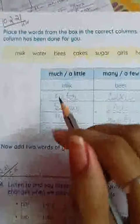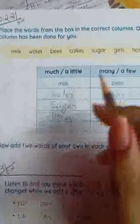Many bees. A few bees. Water. Match water by a little water. Many eggs.